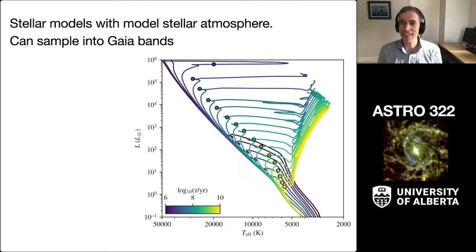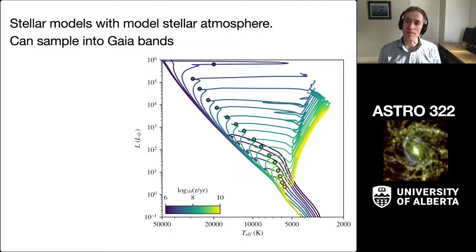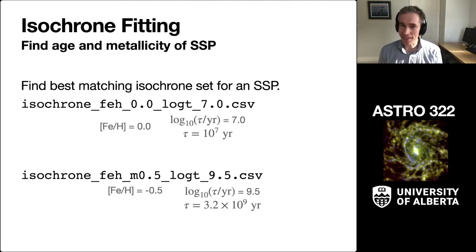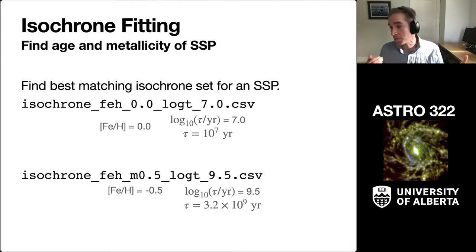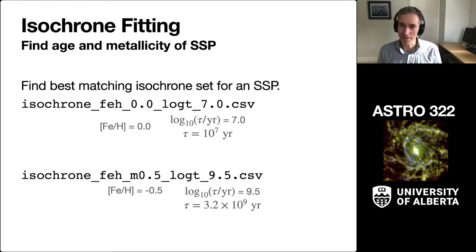The little circle annotated there is the end of the main sequence lifetime for the highest mass stars still on the main sequence in each of these isochrones. That's sometimes called the main sequence turnoff point. So we're going to actually look at isochrones in the context of Gaia data. You can follow along at home if you want to open up E-Class and Gaia and follow along with what I'm doing.